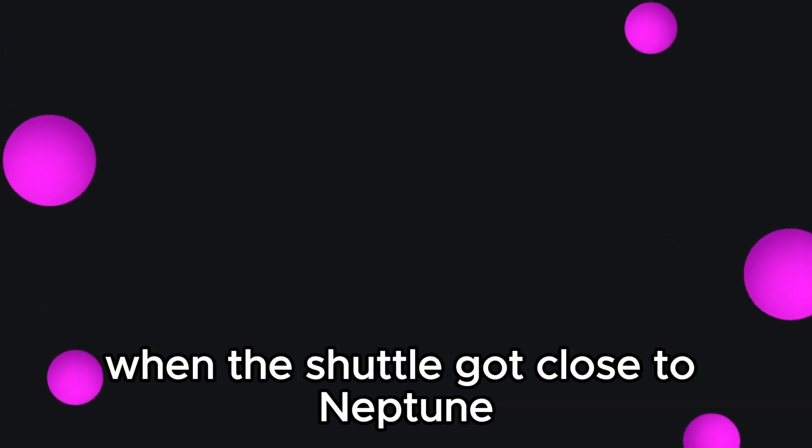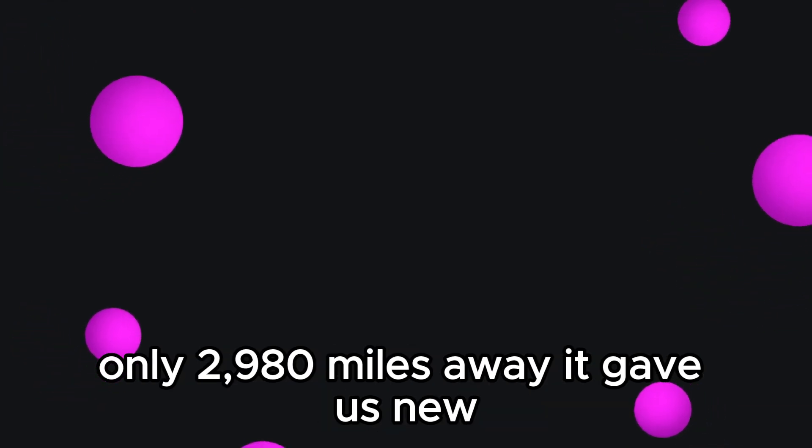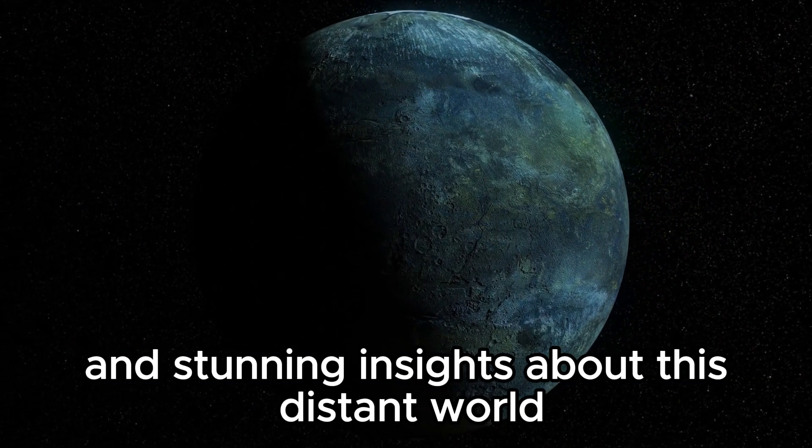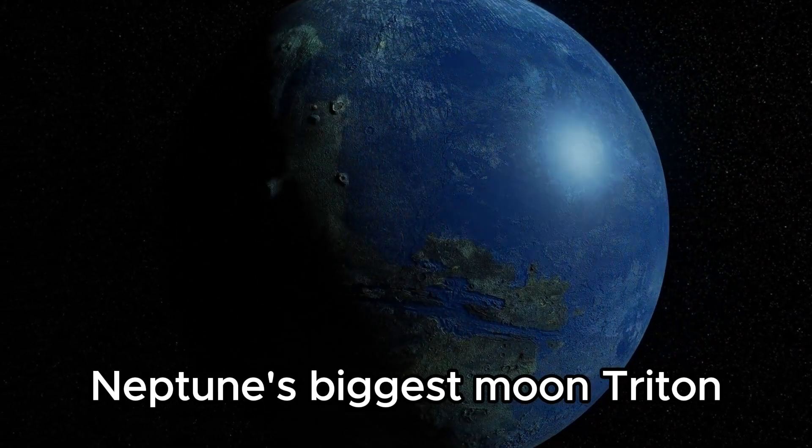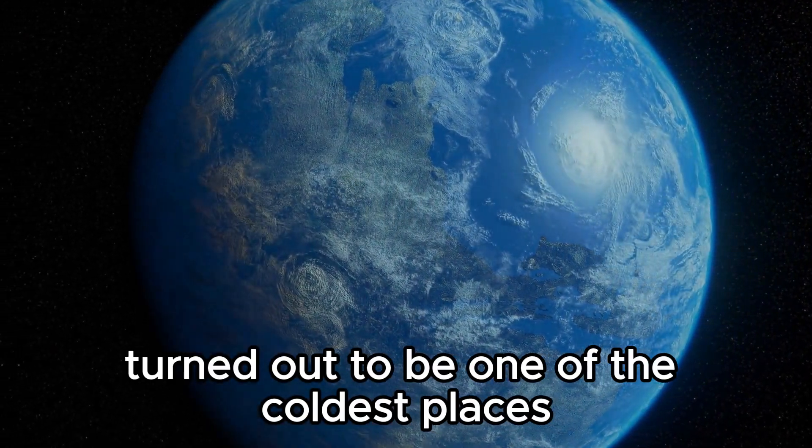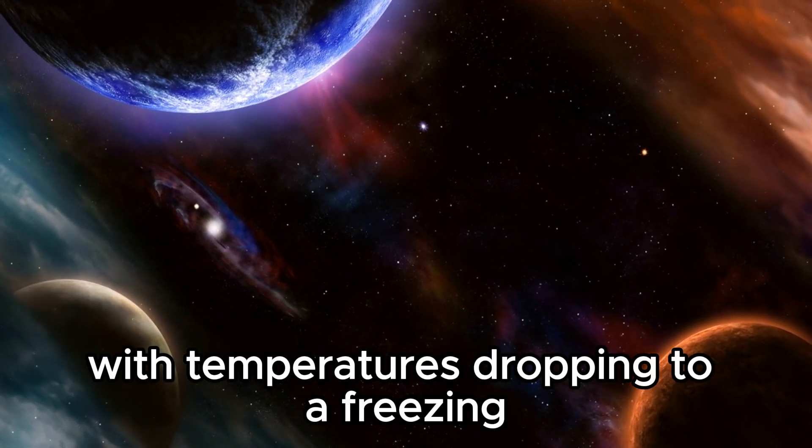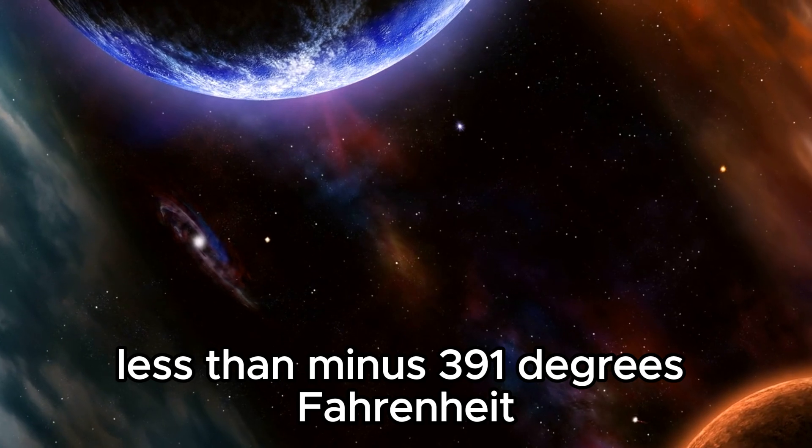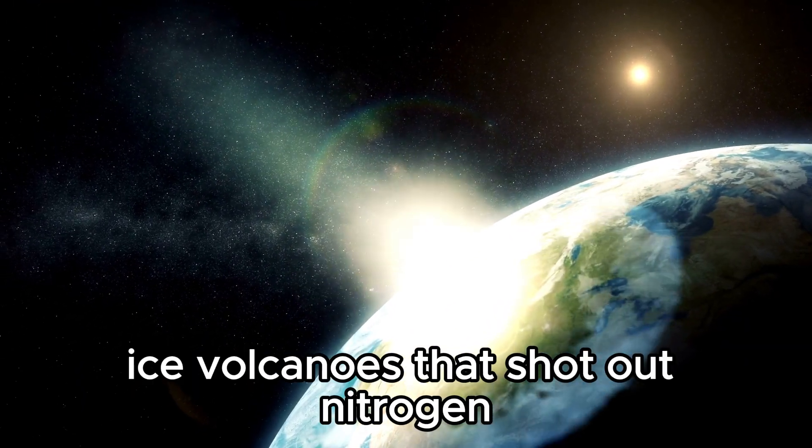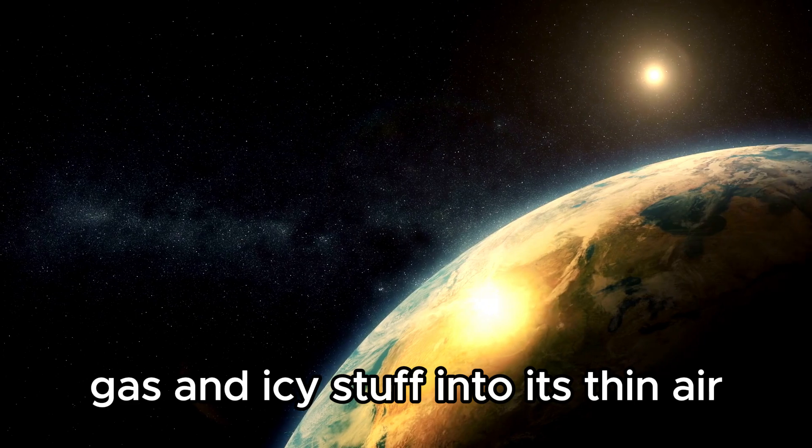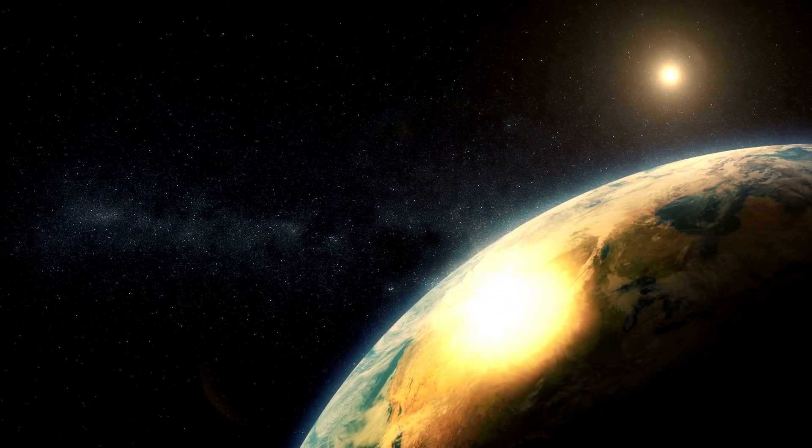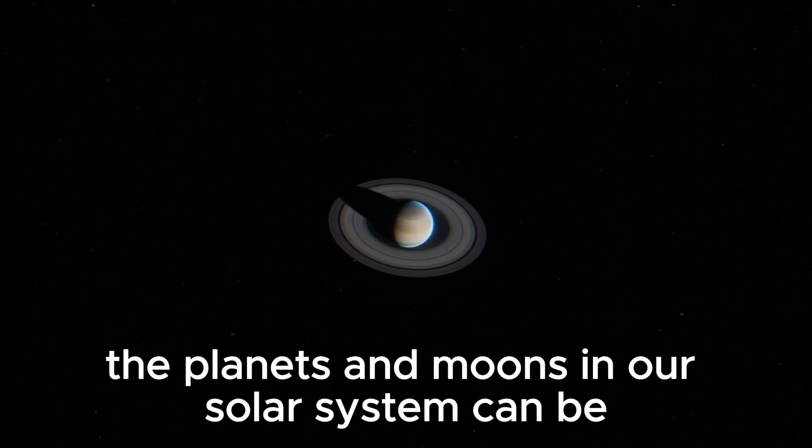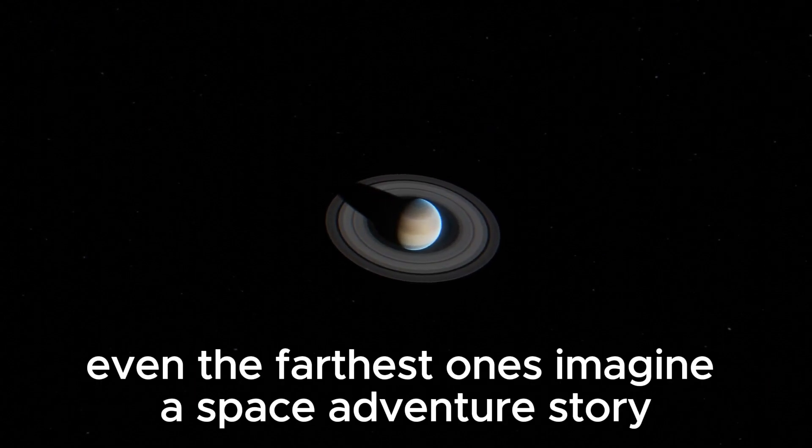When the shuttle got close to Neptune, only 2,980 miles away, it gave us new and stunning insights about this distant world. Neptune's biggest moon, Triton, turned out to be one of the coldest places in our planetary group, with temperatures dropping to a freezing less than minus 391 degrees Fahrenheit. Triton also had these cool ice volcanoes that shot out nitrogen gas and icy stuff into its thin air. These revelations made us realize how unique and fascinating the planets and moons in our solar system can be, even the farthest ones.